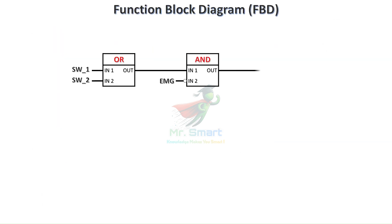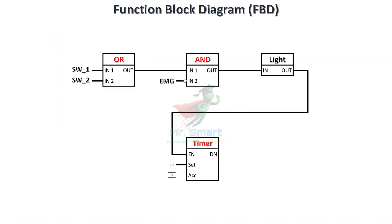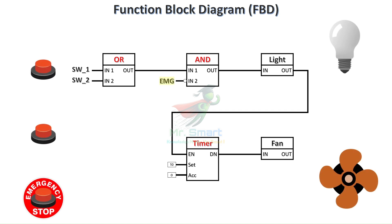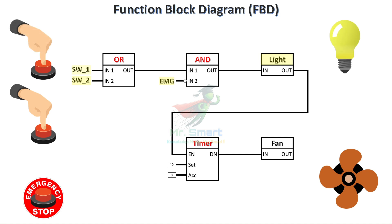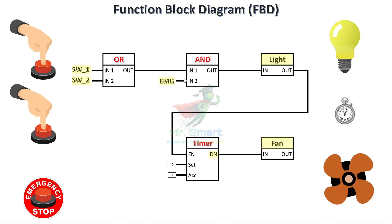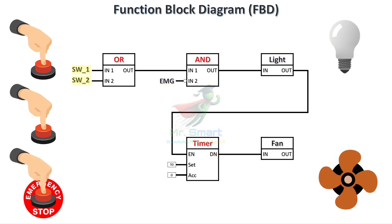Function block diagram, or FBD, uses graphical blocks to represent different functions like timers, counters, and logic gates. Each block has inputs and outputs that connect to other blocks, creating a flow of information. FBD is particularly useful for engineers who think visually, as it's easier to see the overall process at a glance. It's ideal for complex control systems like PID controllers, signal processing, and batch processes in industries.